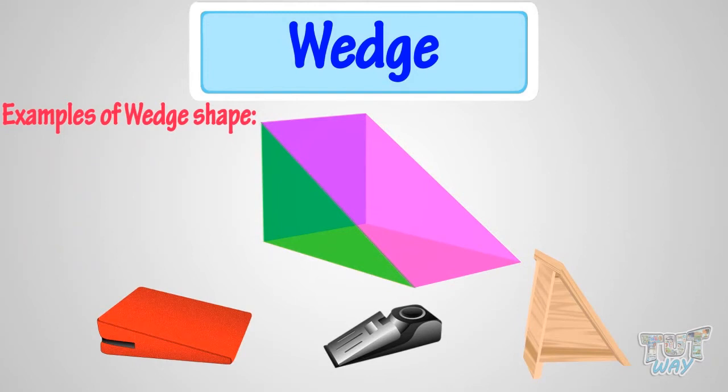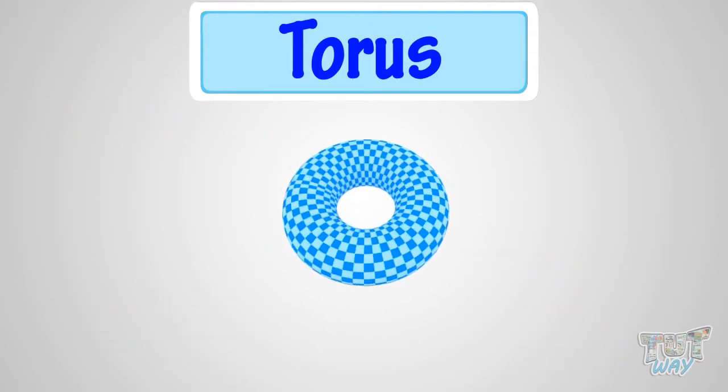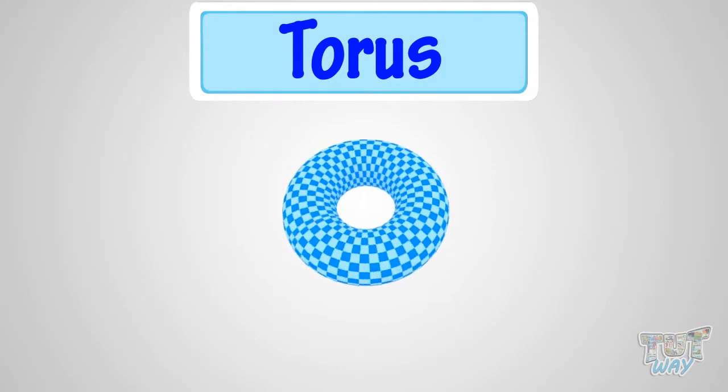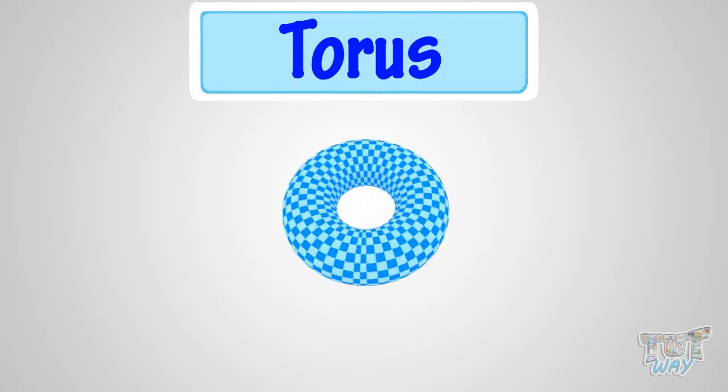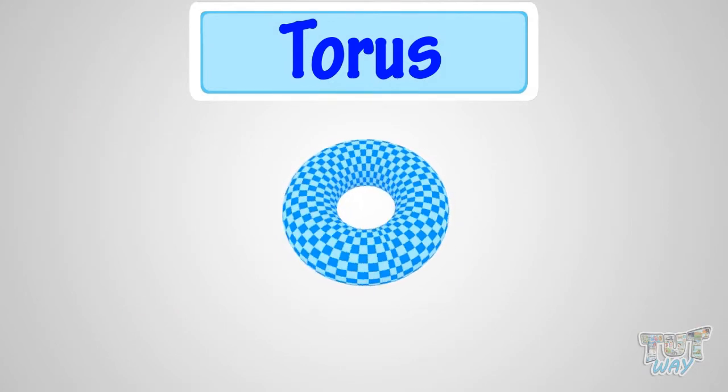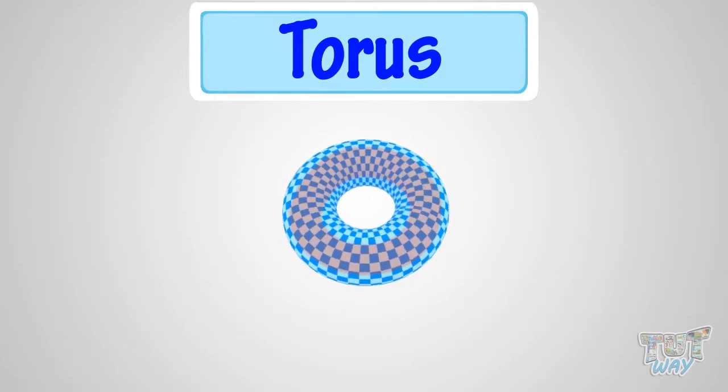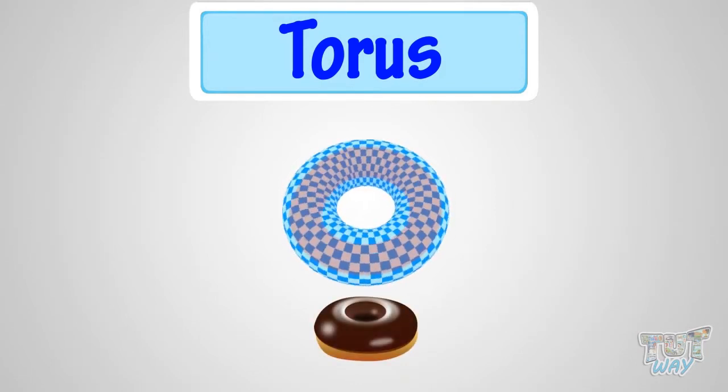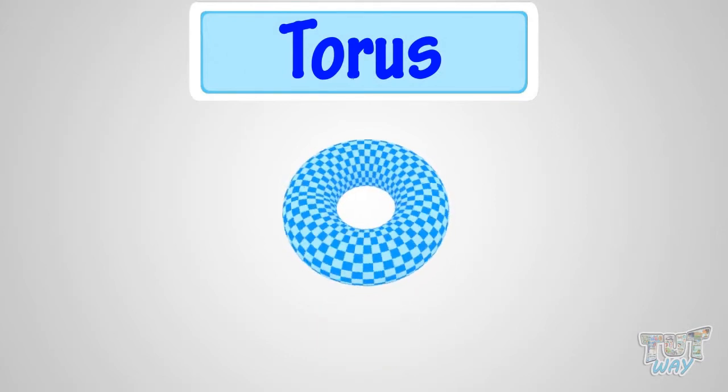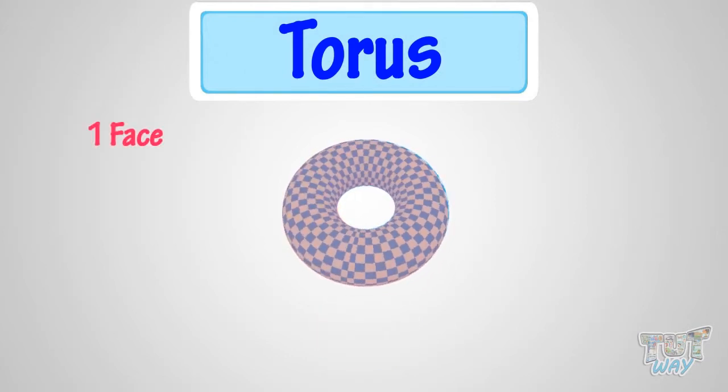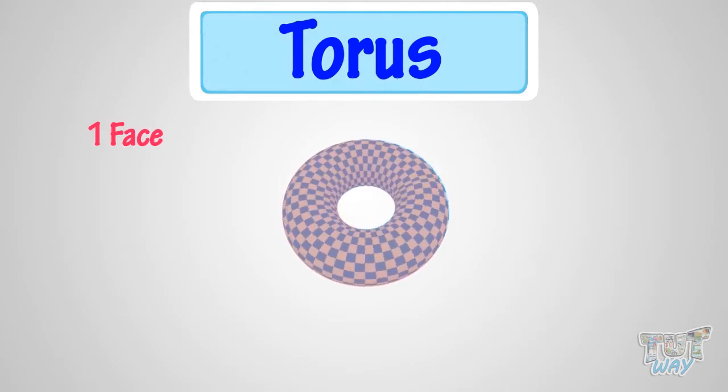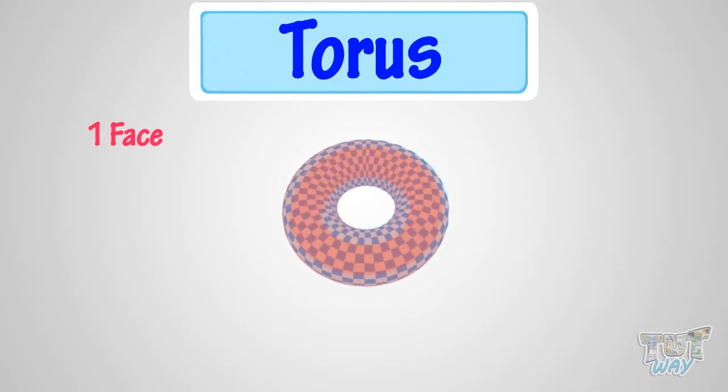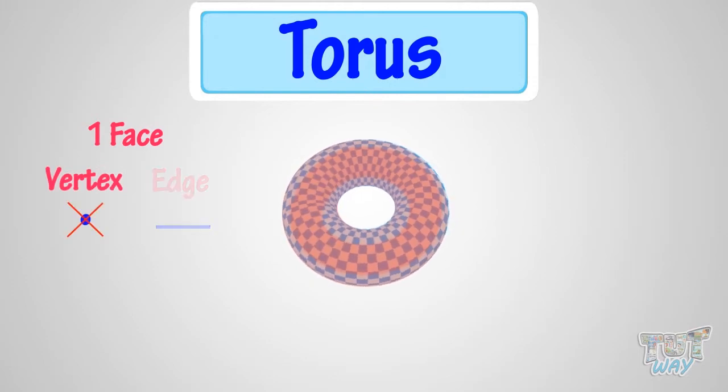Let's learn another 3D shape: Torus. Torus is a 3D shape whose surface has a ring shape resembling a donut. It has only one face, that is its surface, which is ring-shaped. It has no vertex and no edge.